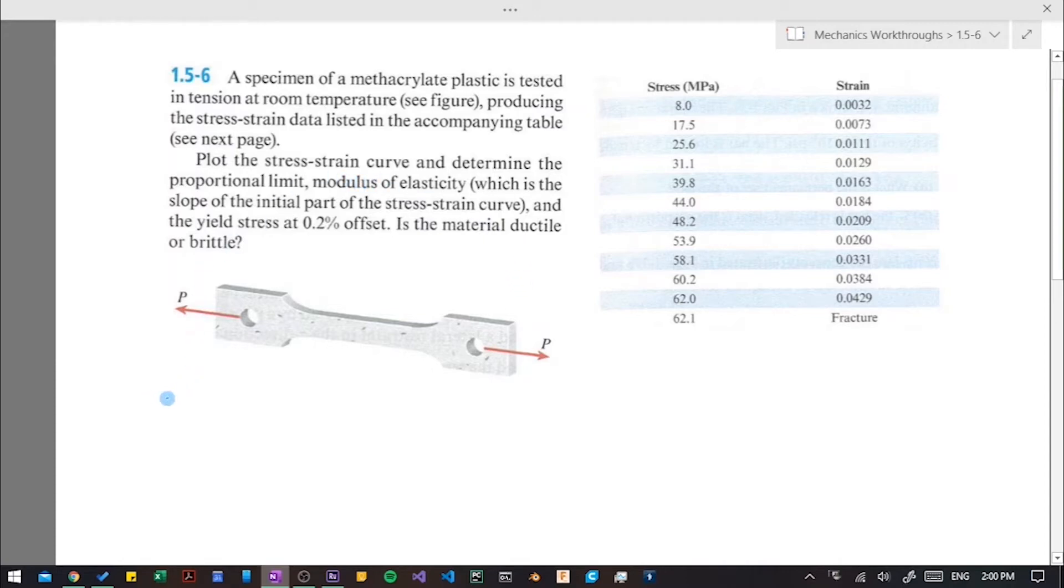So let's write our givens and finds. So really all we're given is the table for this one. And then there's a few things that we are finding. So we're going to make our stress strain curve. And we're going to find the proportional limit, which is the stress at which the curve stops being linear. And then the modulus of elasticity, which it explains is the slope for the first part. And the yield stress at 0.2% offset. And I'll talk a little bit more about that once we have our graph. And then we will determine whether the material is ductile or brittle.